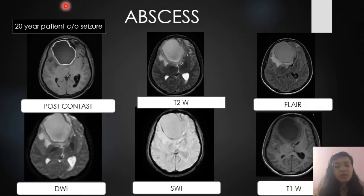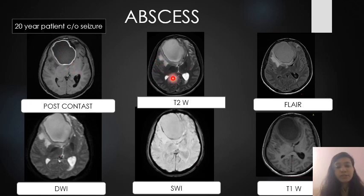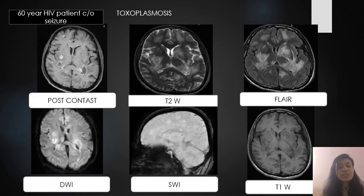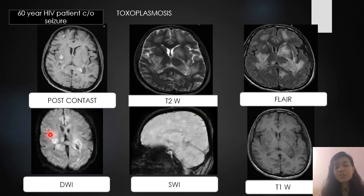The next patient is a 20-year-old complaining of seizure showing a complete ring enhancing lesion in bilateral cerebellar hemispheres. The following case is an immunocompromised patient complaining of seizure showing multiple ring enhancing lesions in bilateral cerebellar hemispheres with surrounding perilesional edema changes on FLAIR images, mild restriction on DWI, and blooming on SWI — likely toxoplasmosis.